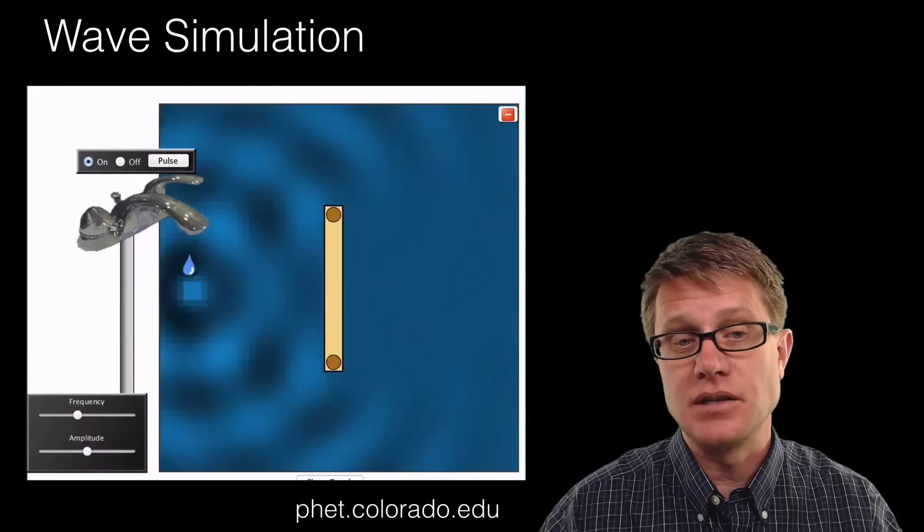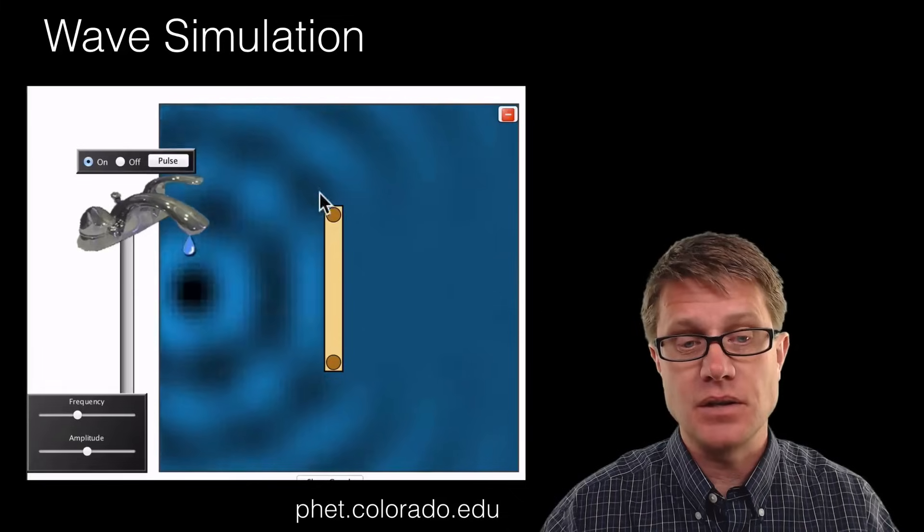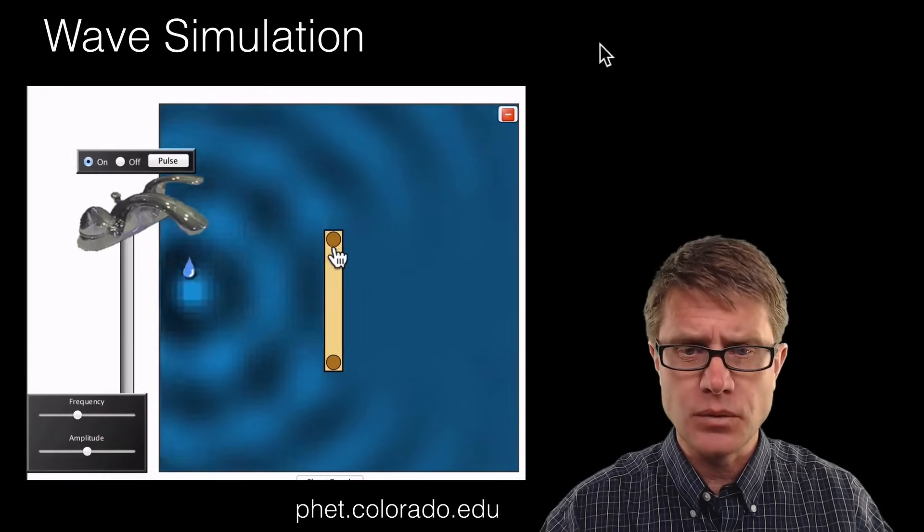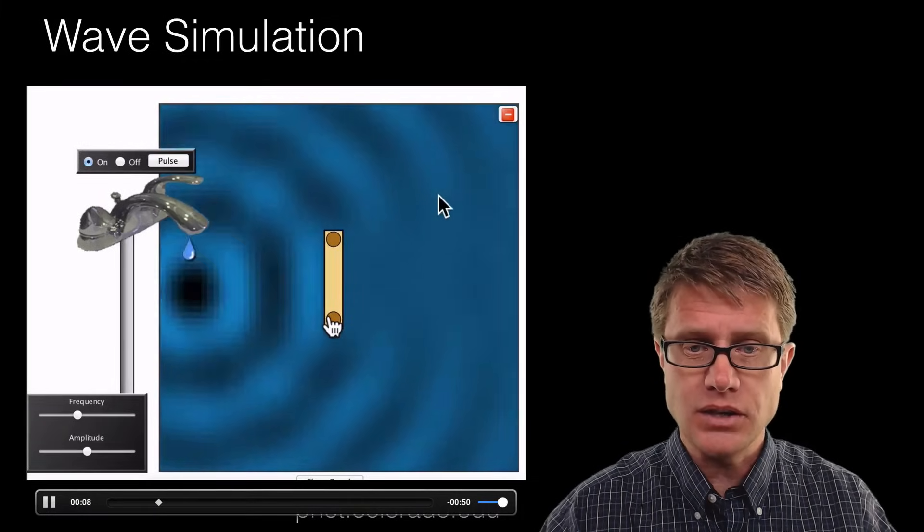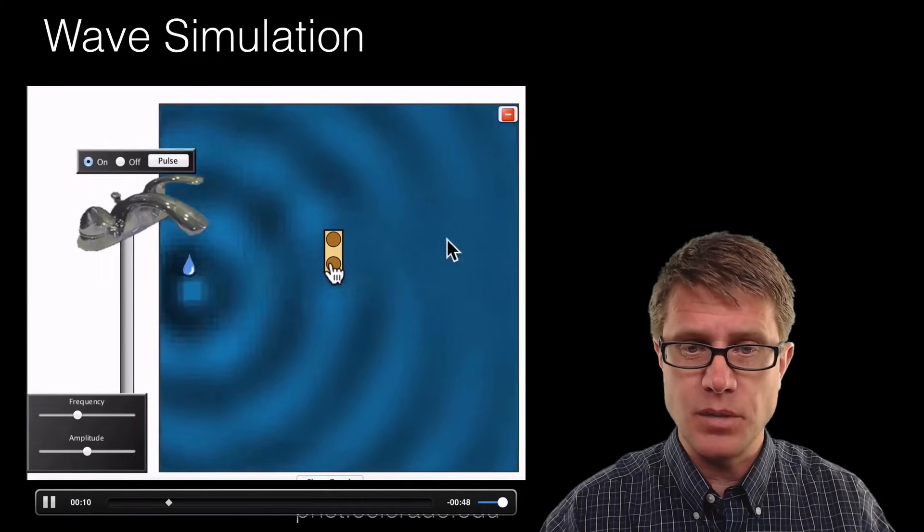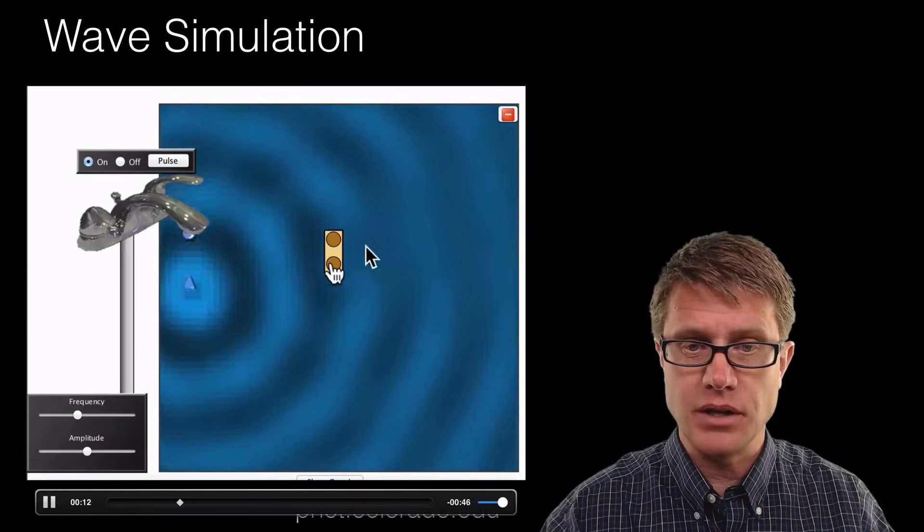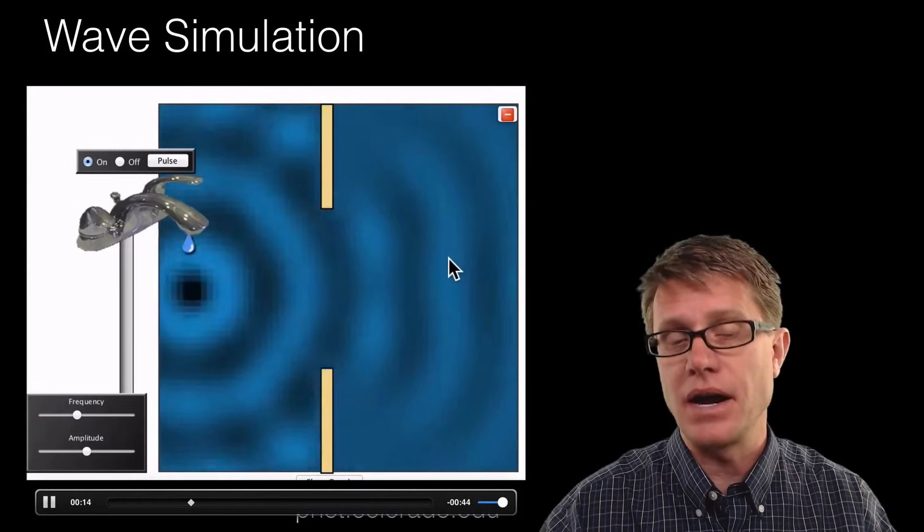Here is a little PHET simulation of that. We are generating some waves on the left side, water waves. We are seeing diffraction over here. You can see it bend around. But watch what happens as we make that smaller and smaller and smaller. Look at that. We are getting more and more diffraction around that obstacle.